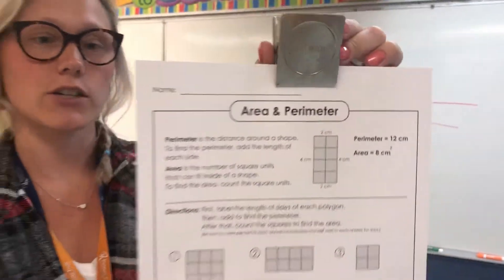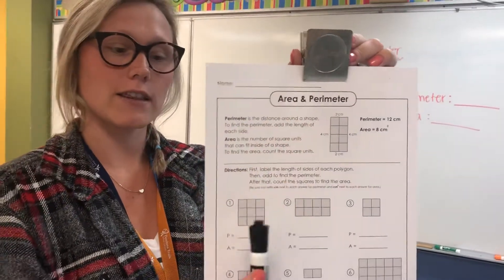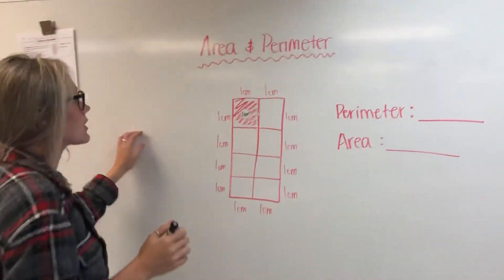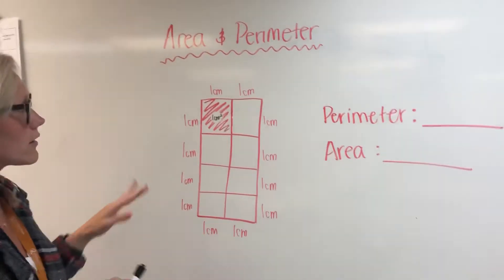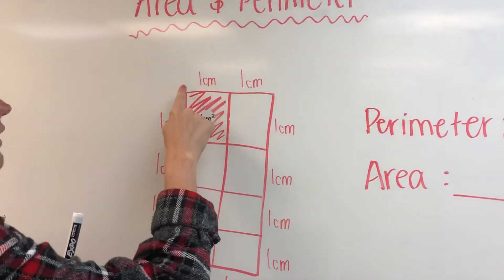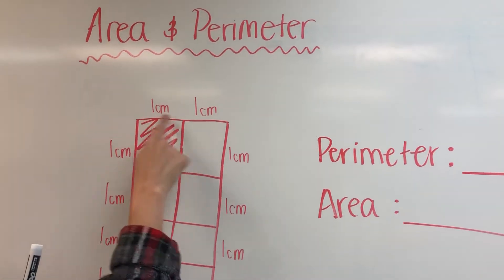I'm just going to show you this first example and then the rest just follow suit. So when we're looking at this rectangle, we can see that each square is one side of it is one centimeter.